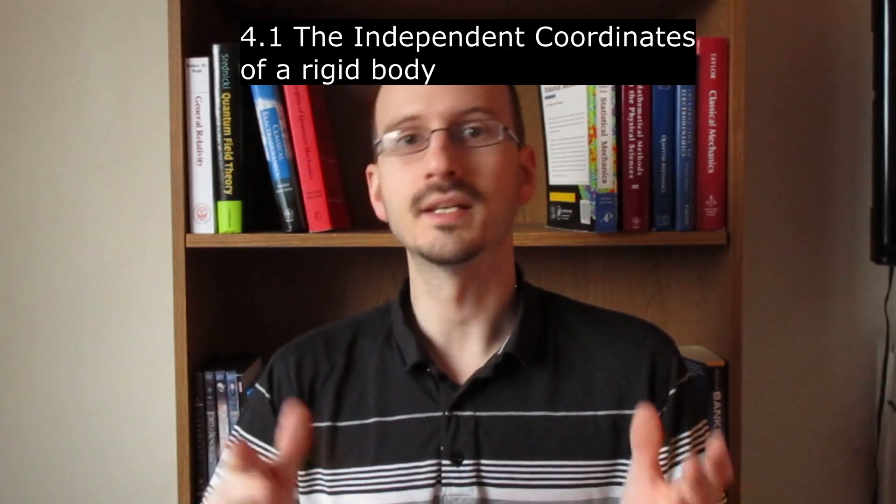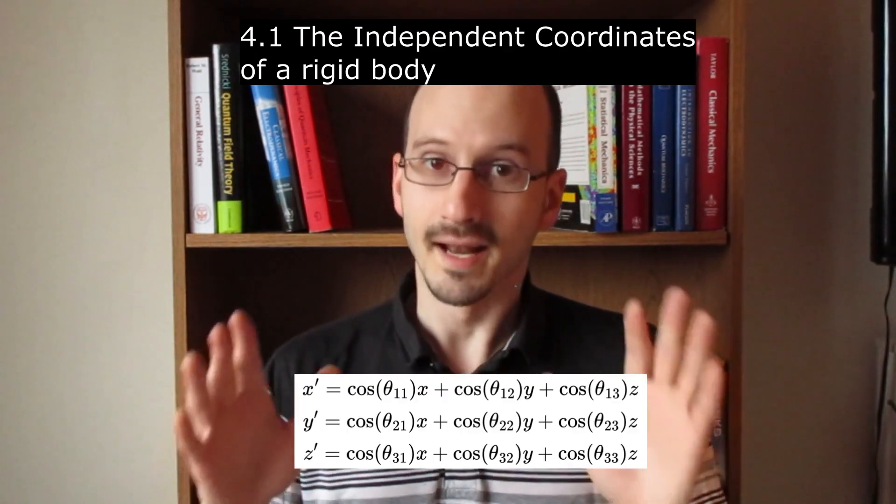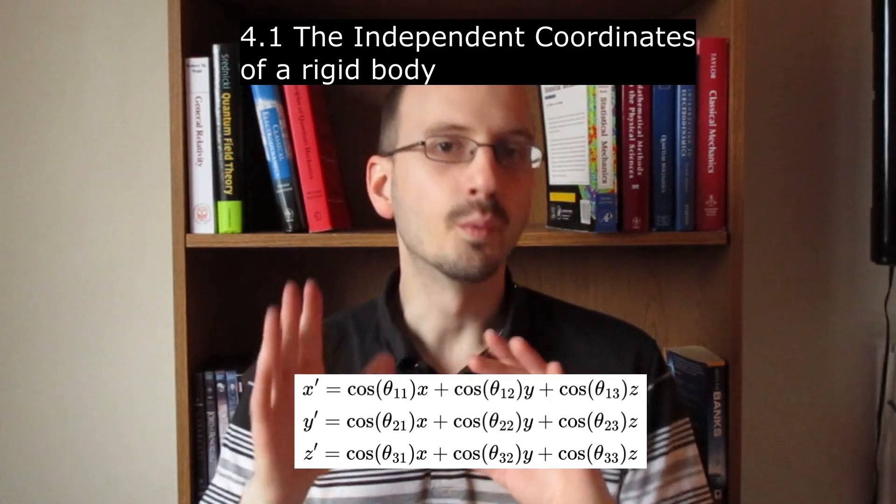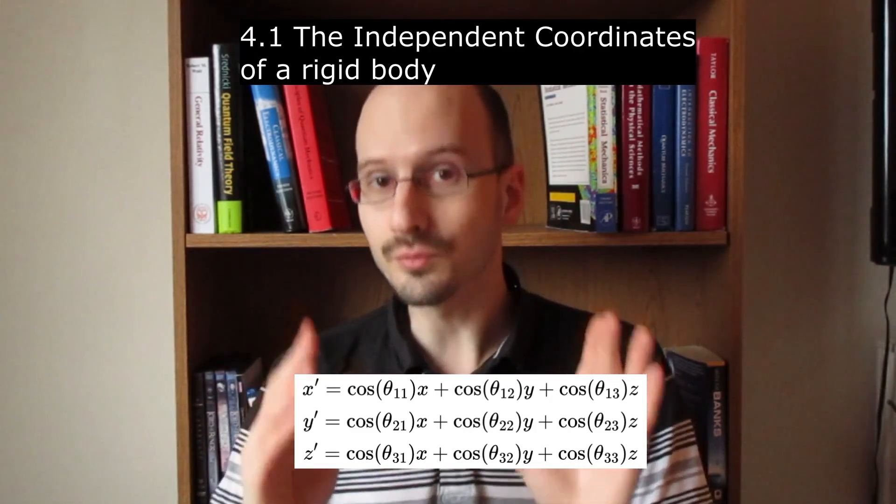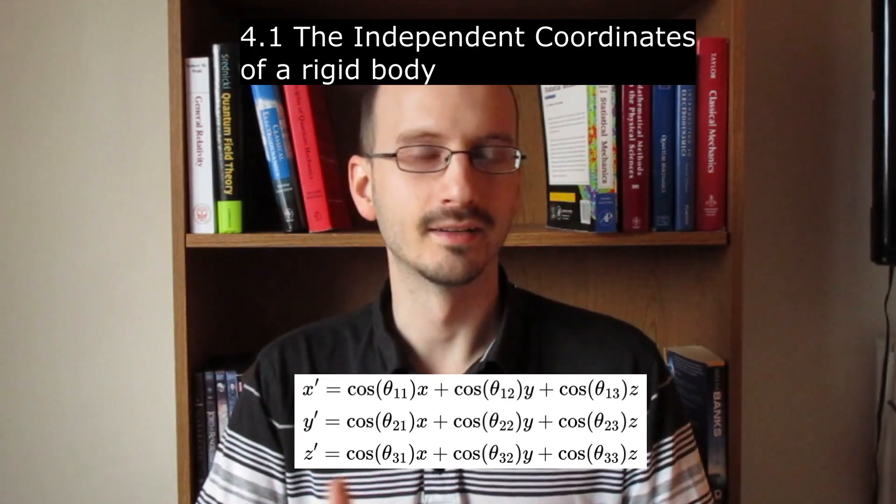The transformation of a point into rotated coordinates looks like this. And I know that's a lot, but I wrote it all out for a reason. Now something might jump out at you here. We talked about how we only need three coordinates to describe a rotation. But here we have nine. What gives?